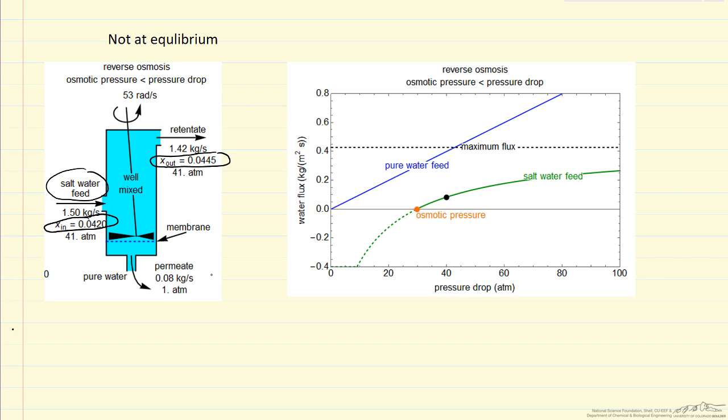Because we're getting pure water here in the outlet. And how much water we get out is a function of this pressure difference. The feed pressure, 41 atmospheres, and the outlet pressure, permeate pressure, is one atmosphere. So the figure on the right shows the water flux as a function of pressure drop across the membrane.